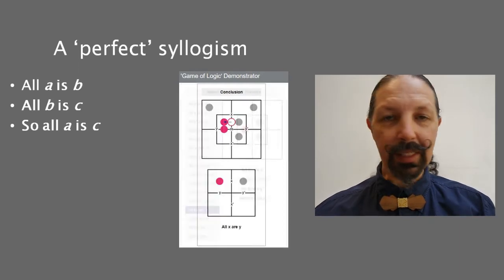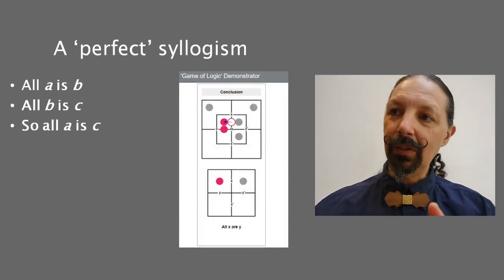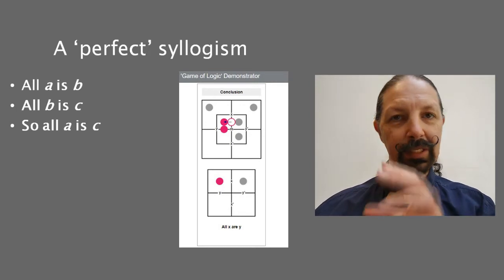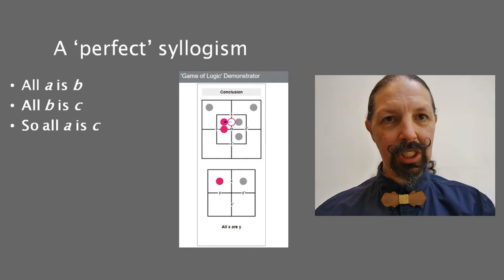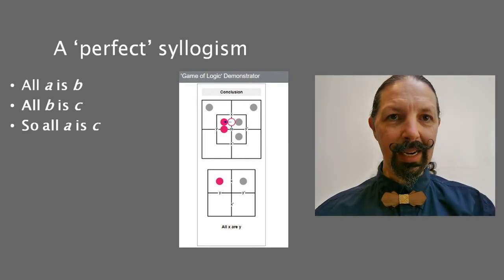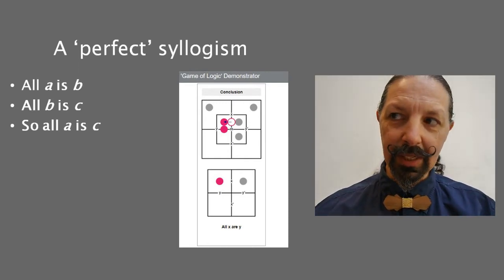And to generate the conclusion, all A is C, which means you have to move counters about, read the result, and generate the conclusion. Again, it's not very visually intuitive.